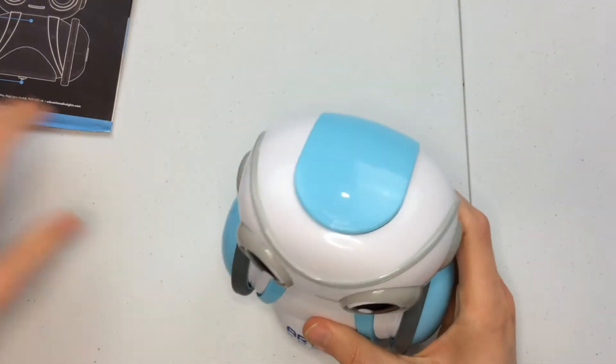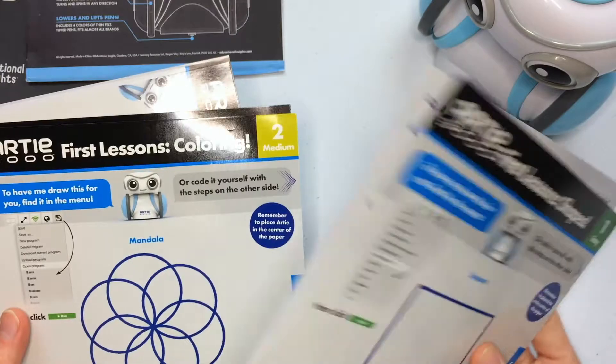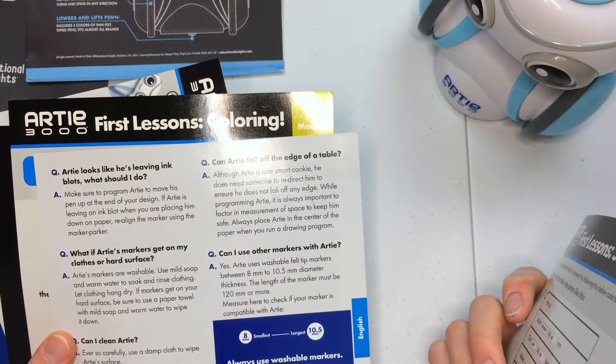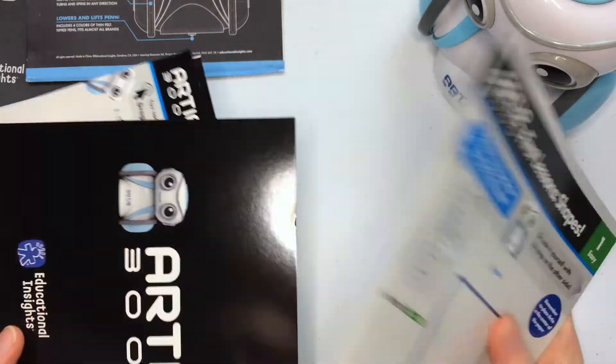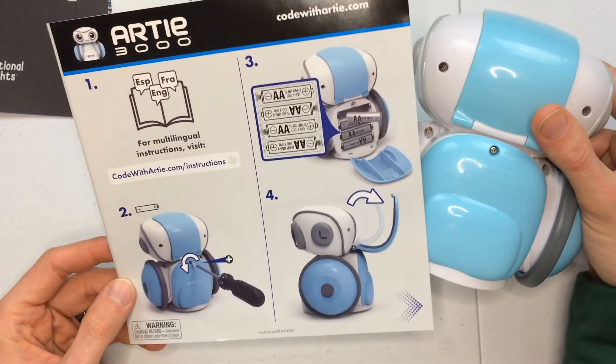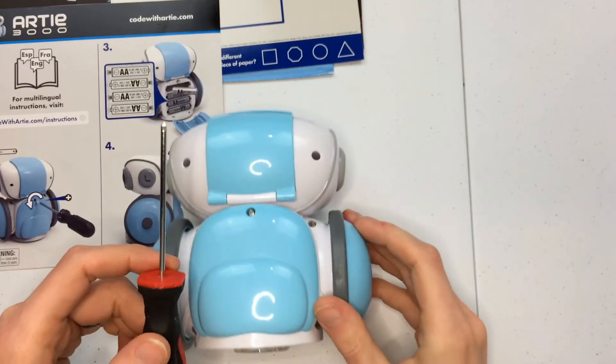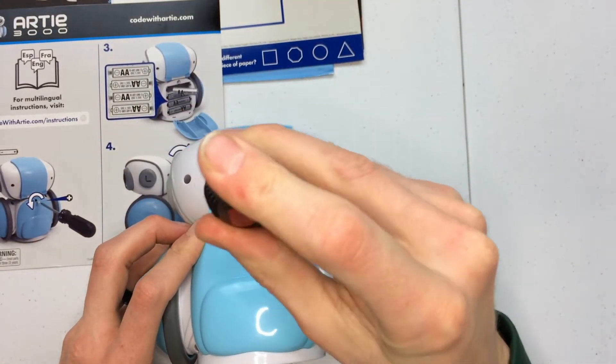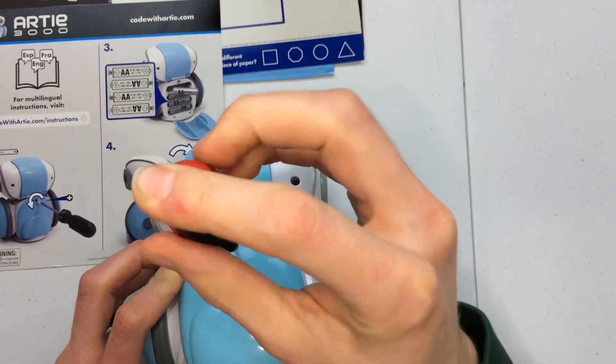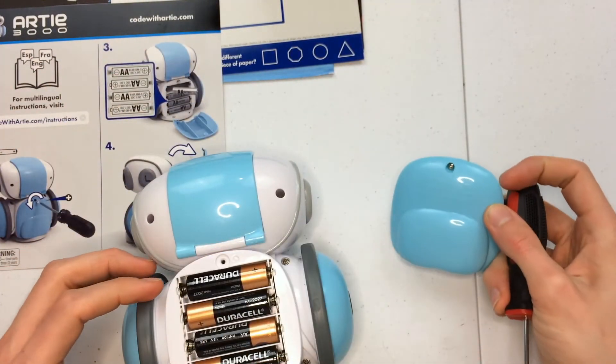So our first task is to see how this powers on and how it receives power. Let's go to the instruction manual. These screws are going to be on the back of the robot to get to the battery compartment. Let's go get a screwdriver and some tools and then take this thing. Oh, it's got batteries in it!